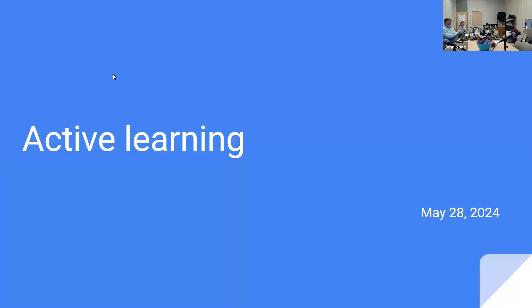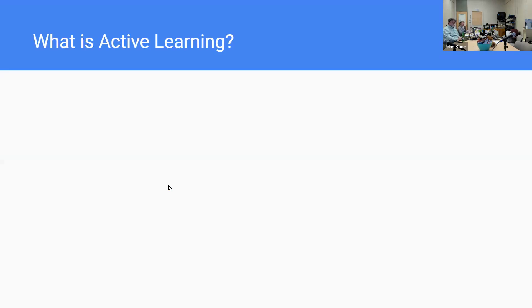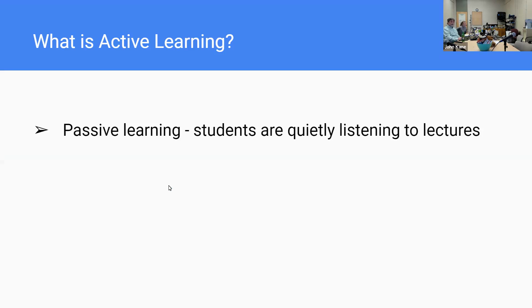We're going to talk a little bit about active learning. We have a short presentation with a link to a lot of really good resources. Active learning is defined in many ways, but it's basically the opposite of passive learning, which is when students are quietly listening to lectures — which empirically is what students tend to prefer. It's a lot less work just to sit there and pretend to be listening.